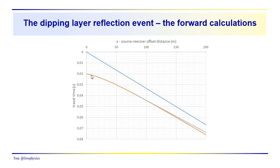We'll end up today leaving you with a problem where you're given data, and you're going to be asked to determine what the dip of the layer is, the thickness of the layer, and what the velocity is. We'll assume that you don't actually have a direct arrival, or you can use the direct arrival to cross-check your calculations.